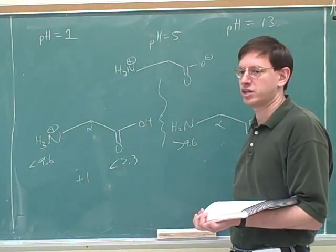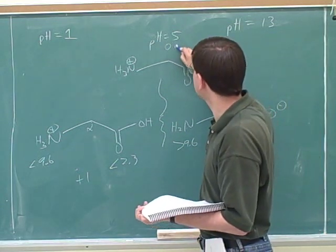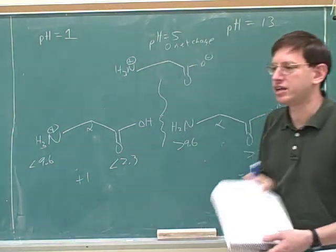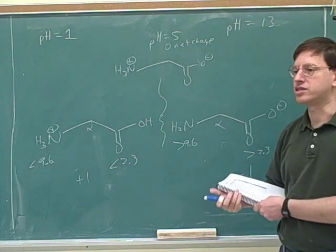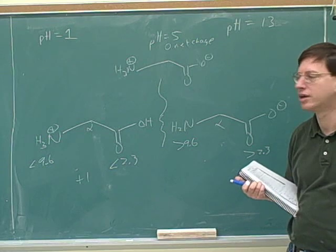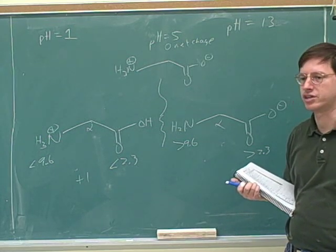So at this pH, what's the net charge? Neutral. Zero net charge. And that's the zwitterion. That's correct. The zwitterion is the form with a zero net charge. That's something we should have in our notes. A zwitterion is the form with zero net charge.